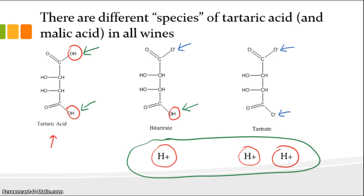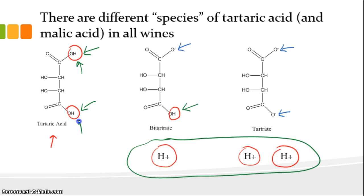What has the sodium hydroxide done? It's neutralized those protons that were already removed from the different species of tartaric acid — the protons that would be measured by pH. But because sodium hydroxide is a very strong base, it also pulls off the protons that were still attached to certain species of tartaric acid. Sodium hydroxide is like a large dry sponge — it can soak up all the acidic protons, whether they've already been removed from tartaric acid or whether they're still attached. That's how it works.